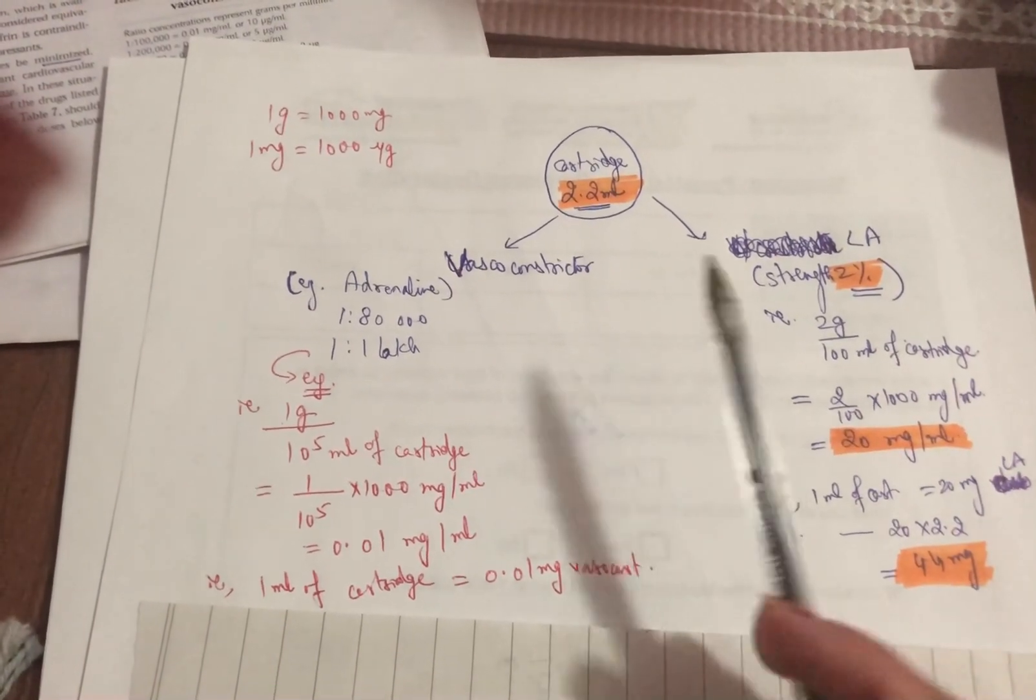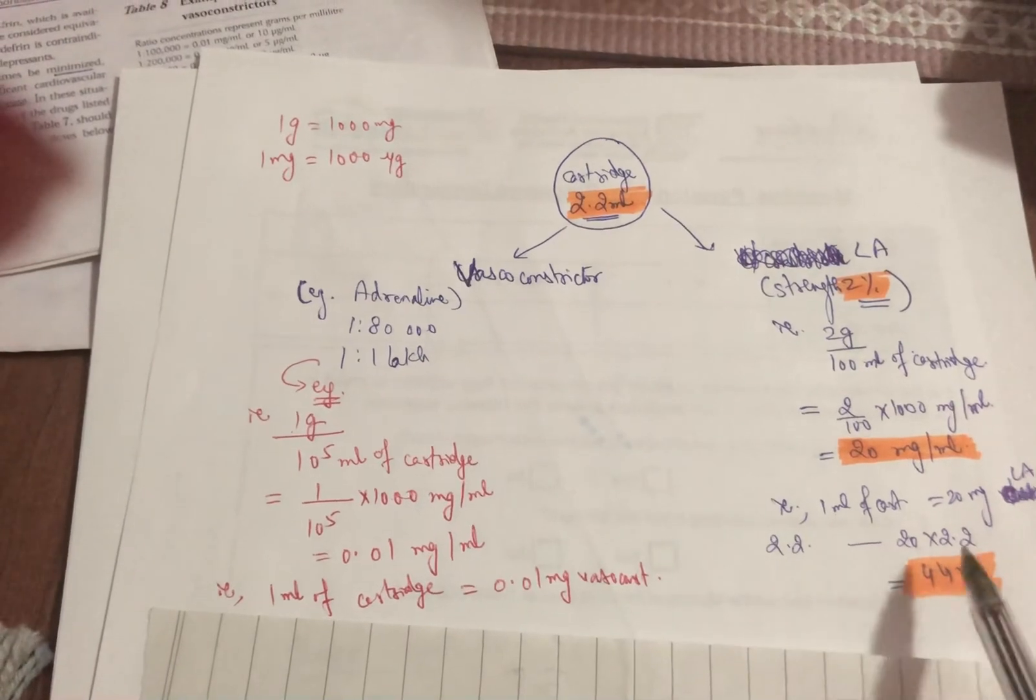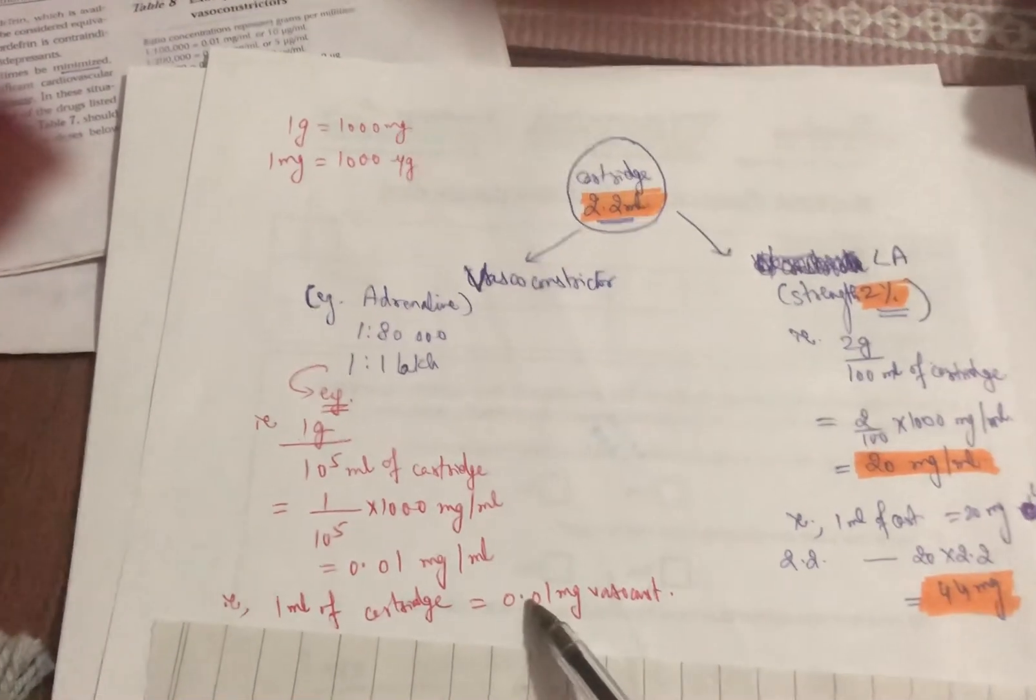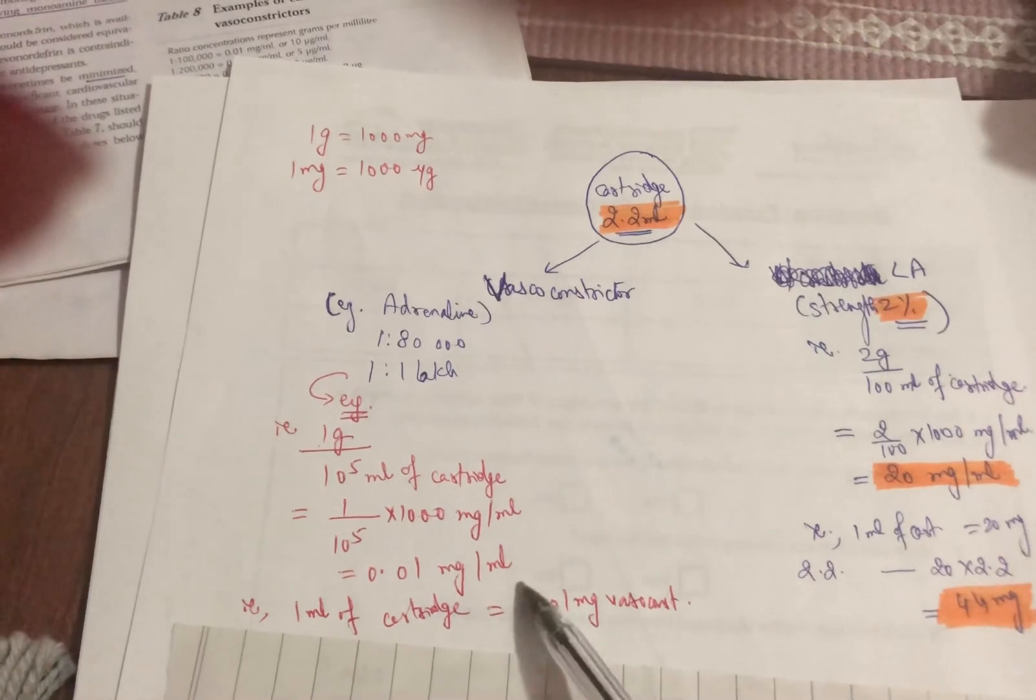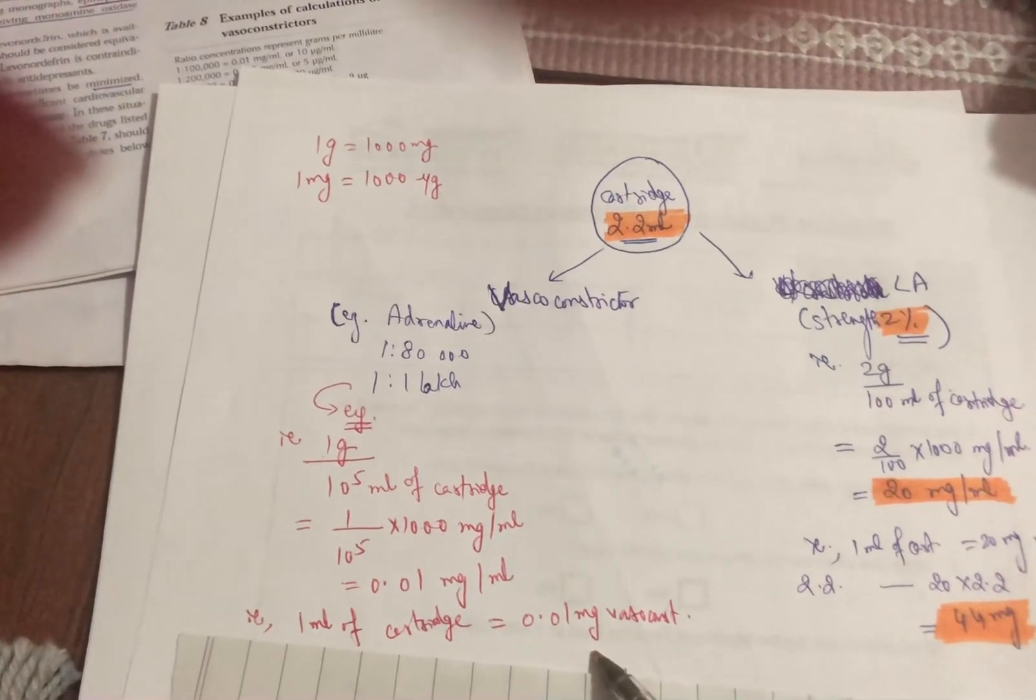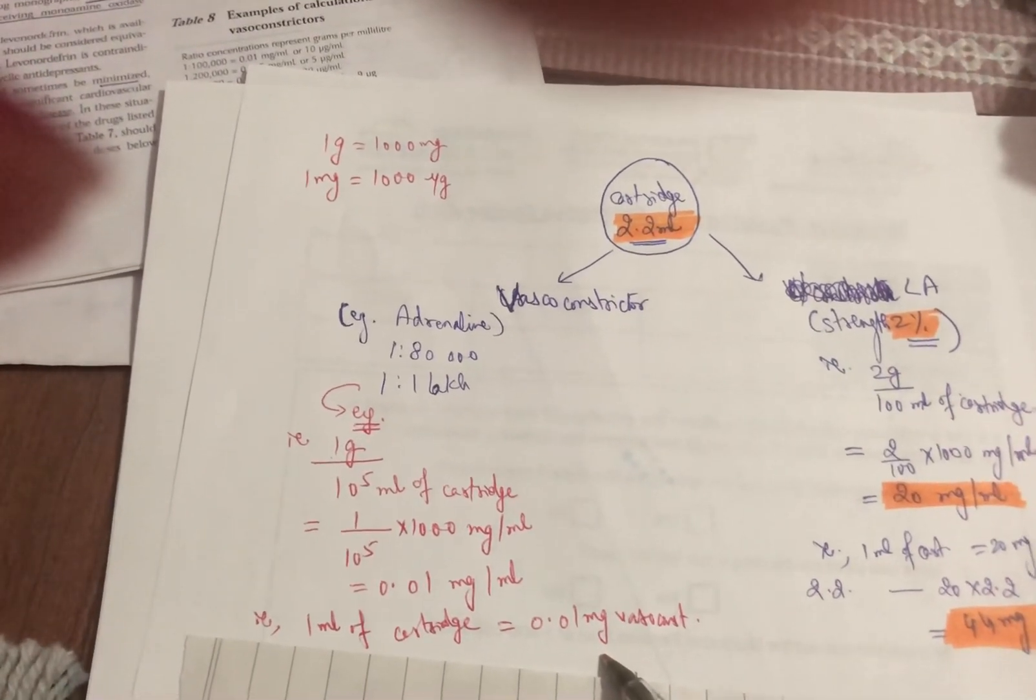So if we wanted to find it out in 2.2, that is the total volume of the cartridge, we could simply multiply it with 2.2. We can similarly do this here, we can multiply it with 2.2.